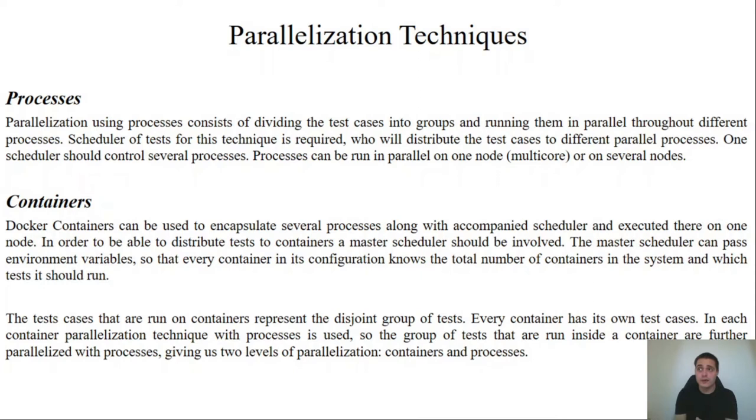Another technique that we are using is containers. Docker containers can be used to encapsulate several processes along with their scheduler and can be executed on one node. If we have several nodes, we can execute several containers in parallel, thus giving us a second level of parallelization. Test cases that are run on containers represent the disjoint groups of tests. We firstly split tests to containers and these are disjoint groups as well. In a container we split the test groups into more test groups which are also disjoint, so we can achieve two levels of parallelization.